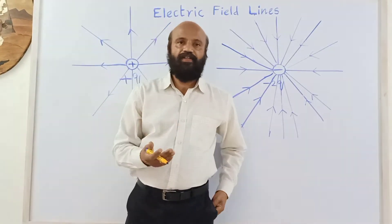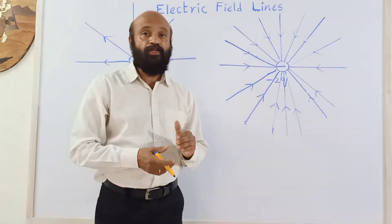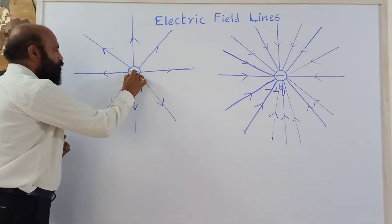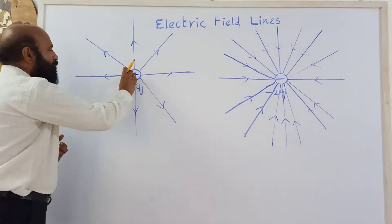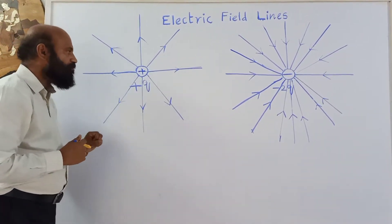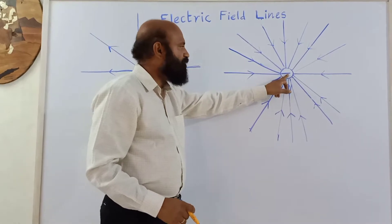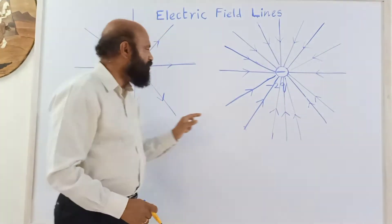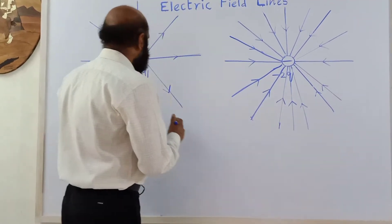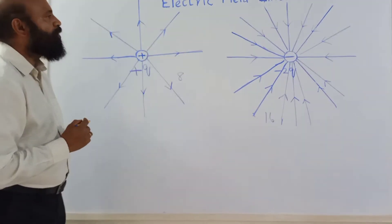Whether positive charge or negative charge, the number of lines emanating from a charge is directly proportional to the magnitude of the charge. From these two examples: here there is a positive charge of magnitude Q, shown by eight lines. Here the charge is 2Q, so the number of lines also doubles — it is shown by 16 lines.